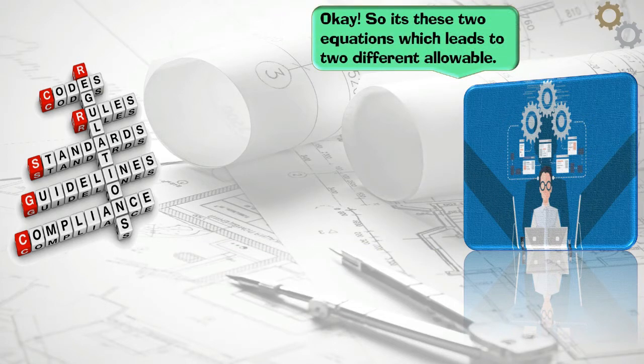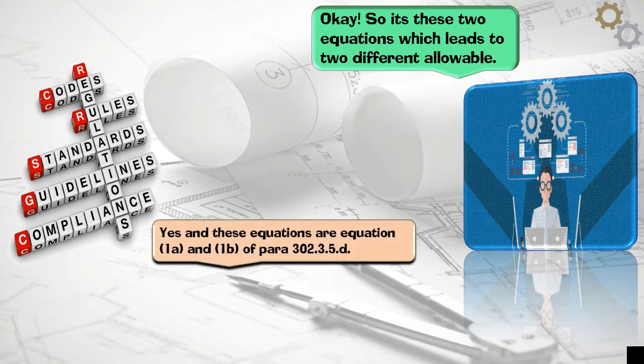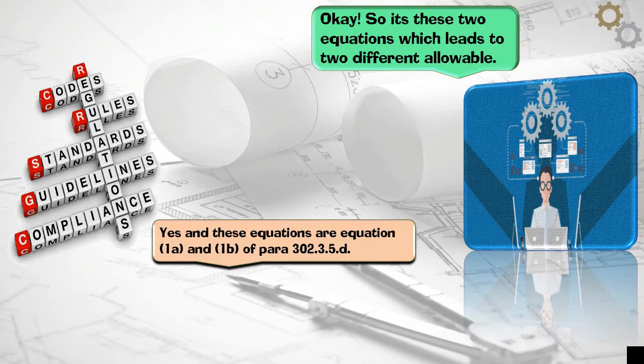Okay. So it's these two equations which lead to two different allowables. Yes, and these equations are equation 1A and 1B of PARA 302.3.5.d.